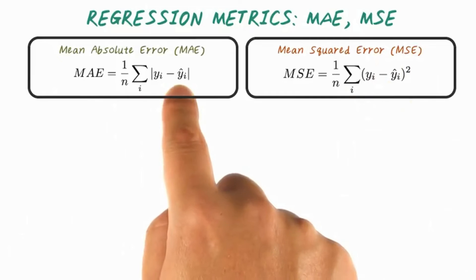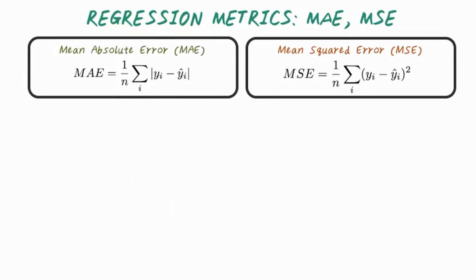On the other hand, MAE is more robust against the outliers, but it's harder to work with because this absolute value is not differentiable.